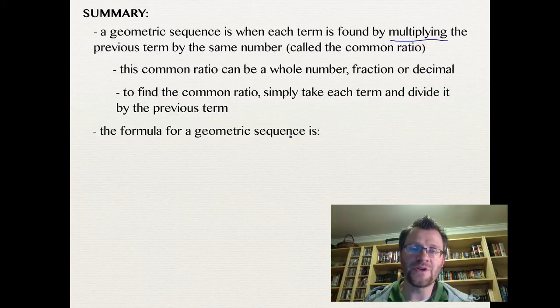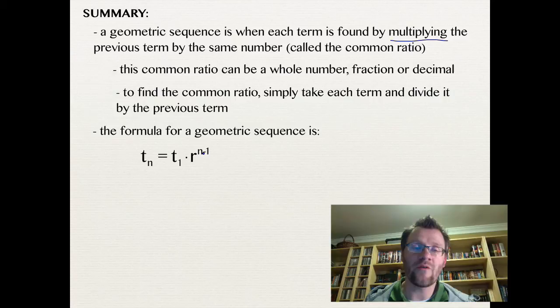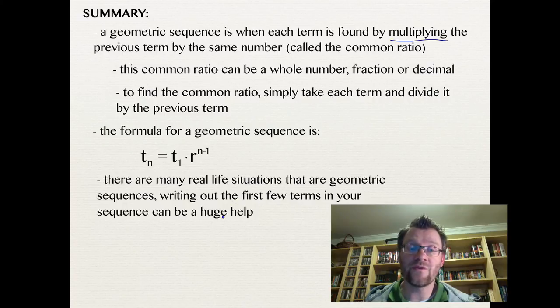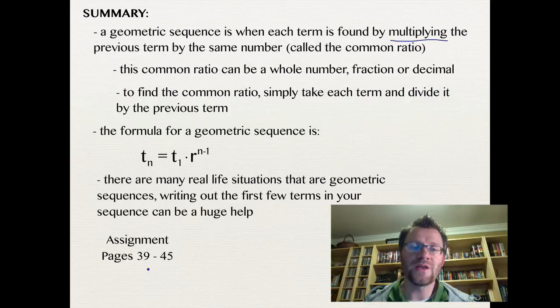The formula for a geometric sequence is TN equals T1 times R raised to the power of N minus 1. Remember that T1 is your first term, R is that common ratio, and N is your number of terms. And there are many real life situations that are geometric sequences, writing out the first few terms in your sequence can be a huge help. And so your assignment is on pages 39 to 45, good luck, and we'll see you in class.